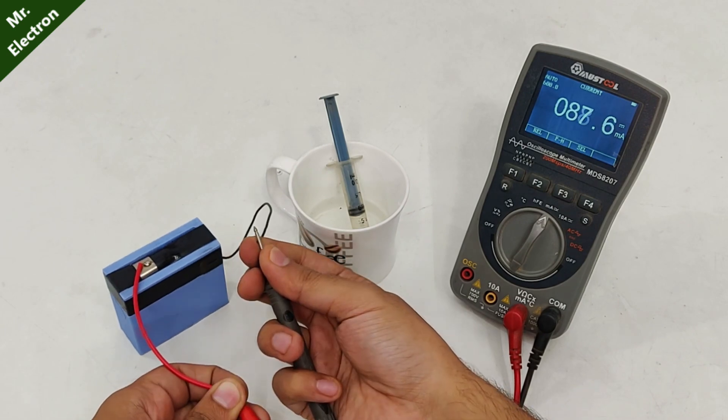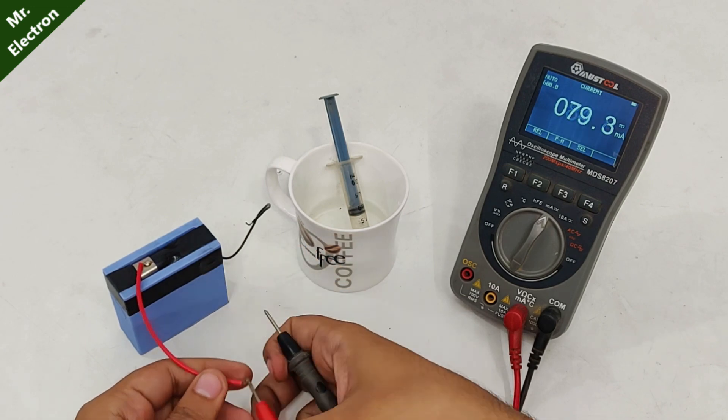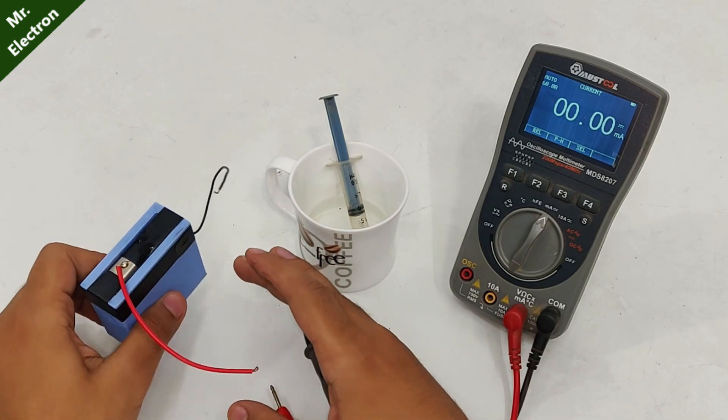Yeah, it is increasing rapidly and has finally stabilized at around 90 milliamperes, and I think it also depends on the concentration of potassium hydroxide that I have added.